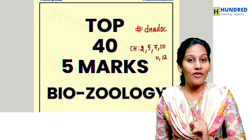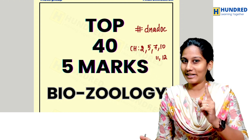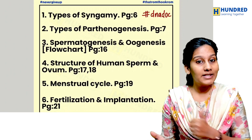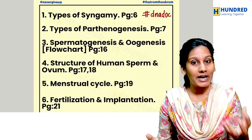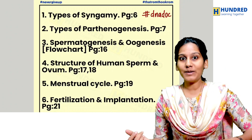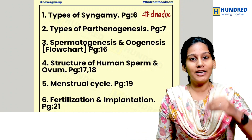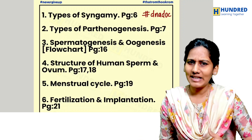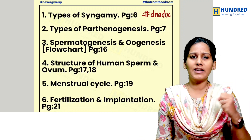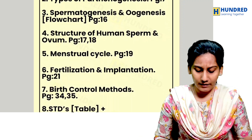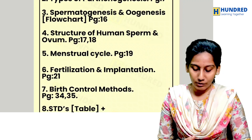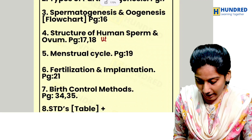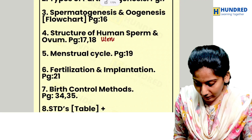In Chapter 6, focus on the top 5-mark topics: syngamy and triple fusion, spermatogenesis and oogenesis. There is a flowchart covering the structure of the human sperm, ovum, and uterus diagrams — read these carefully to answer 2 or 3-mark questions easily as well.